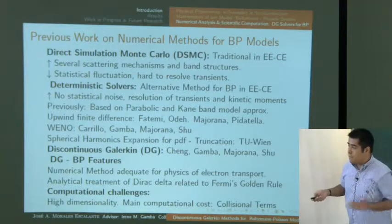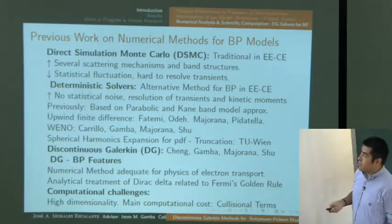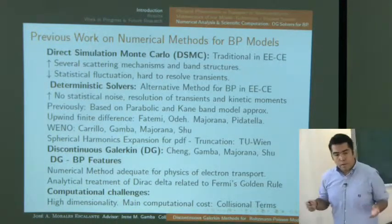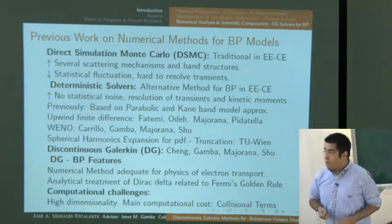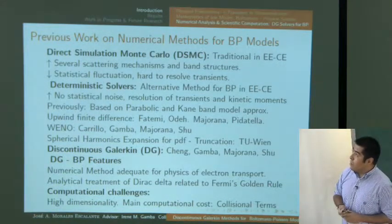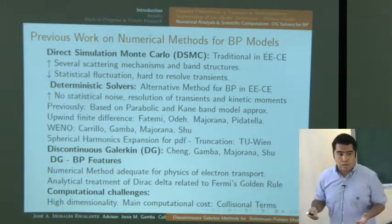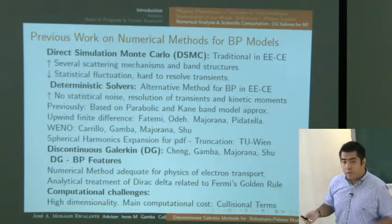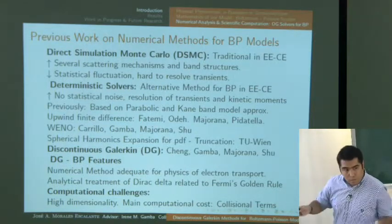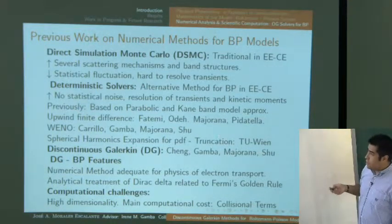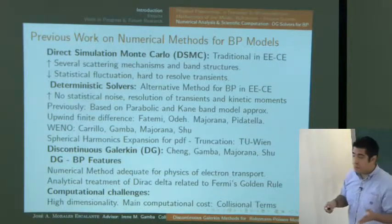The Boltzmann-Poisson electron transport problem is well understood in the electrical engineering community, where historically it has been treated by Monte Carlo methods. Monte Carlo can include scattering as complicated as desired, but always has statistical noise proportional to square root of N. The Boltzmann community provides methods that, while more costly, give moments, current, and physical observables without statistical error — resolving transients and giving kinetic moments cleanly.